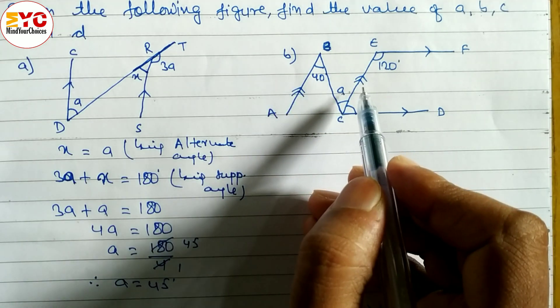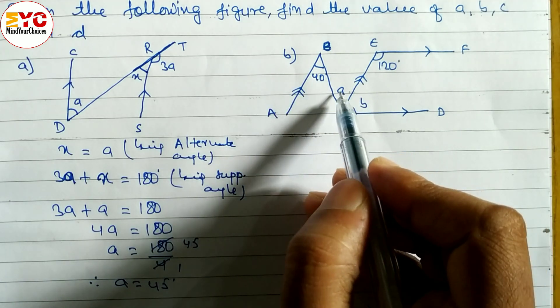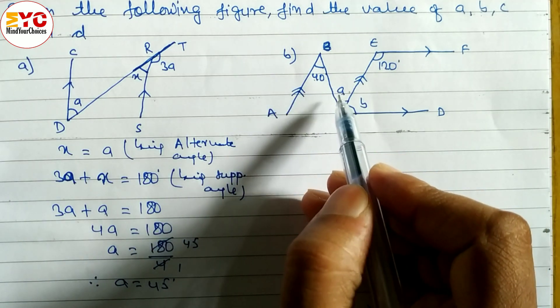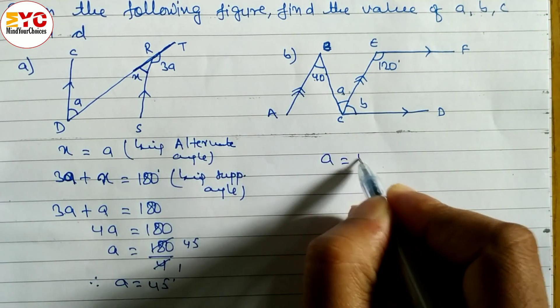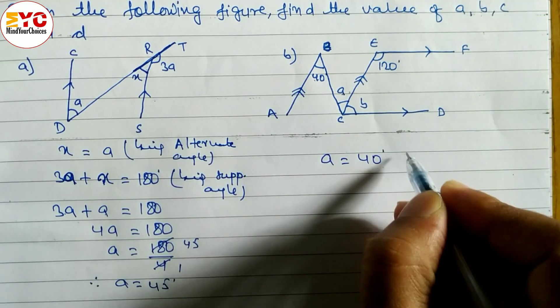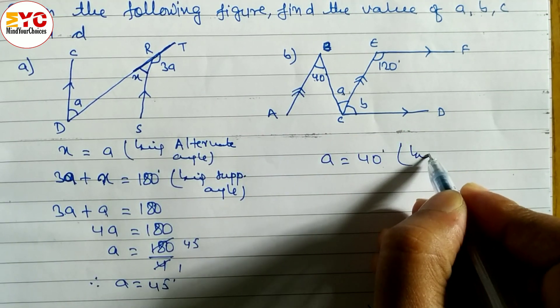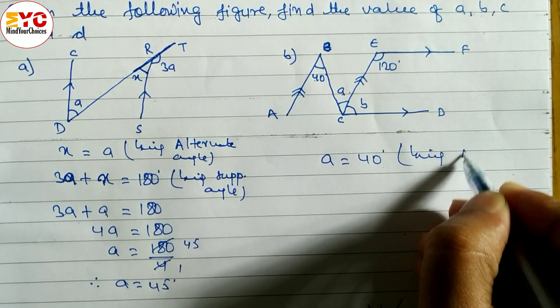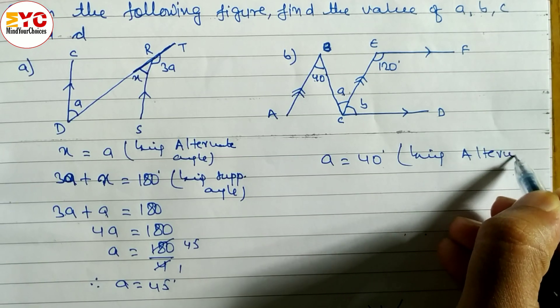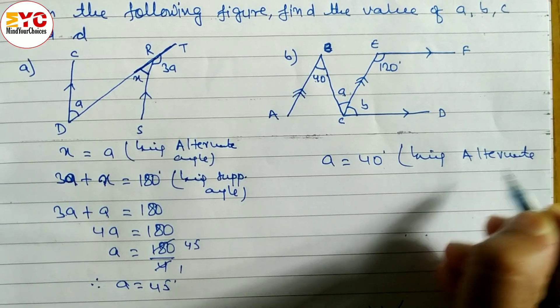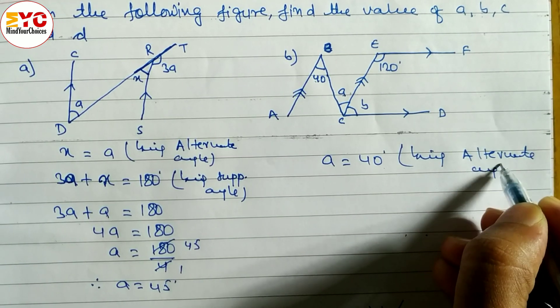If not parallel, we cannot say these two are equal. So, here parallel. So we can write a is equal to 40 degrees. Reason: being alternate angle.